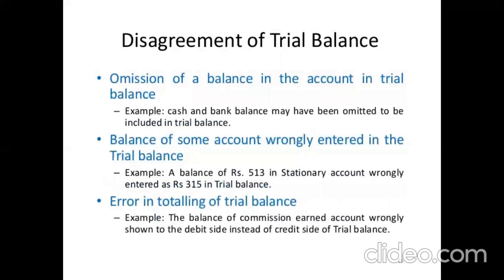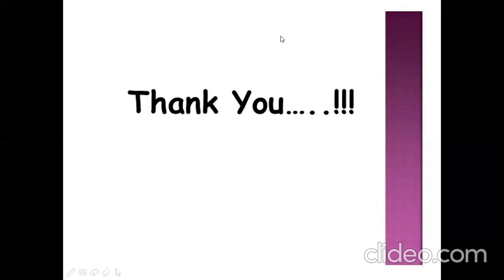Additional reasons for disagreement include omission of a balance in the trial balance — for example, cash and bank balance may have been omitted. Balance of some account wrongly entered — for example, a balance of Rs. 513 in the stationery account entered as Rs. 315. Error in totaling of the trial balance — for example, the balance of commission earned account wrongly shown on the debit side instead of the credit side. These were the various reasons for the non-matching of the trial balance.